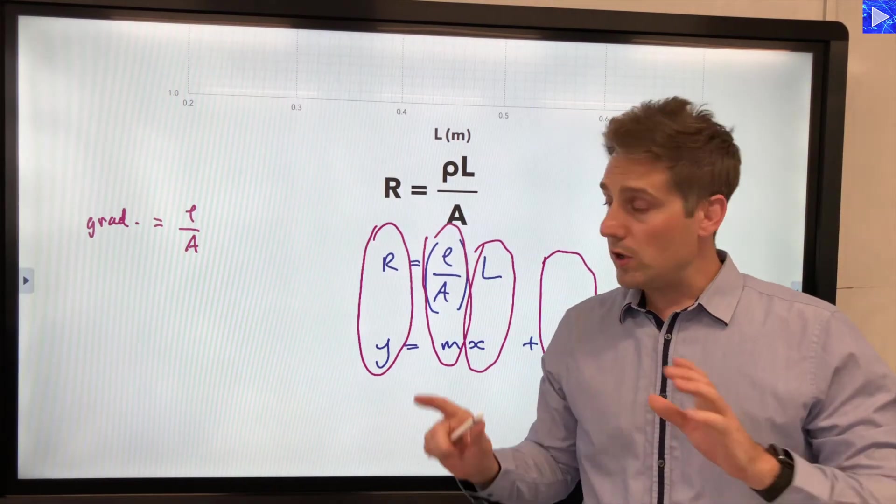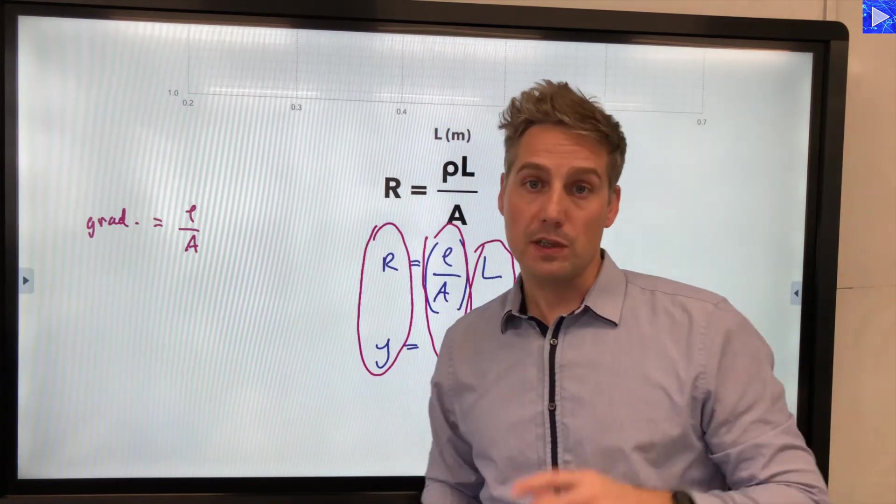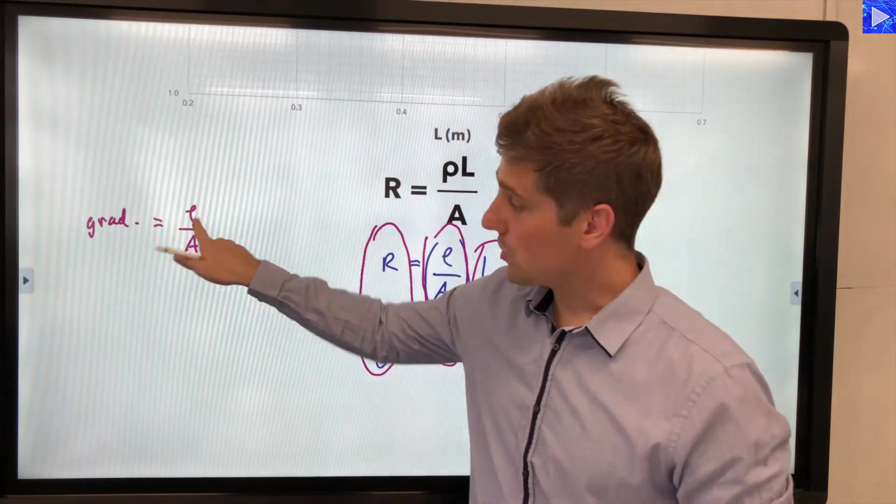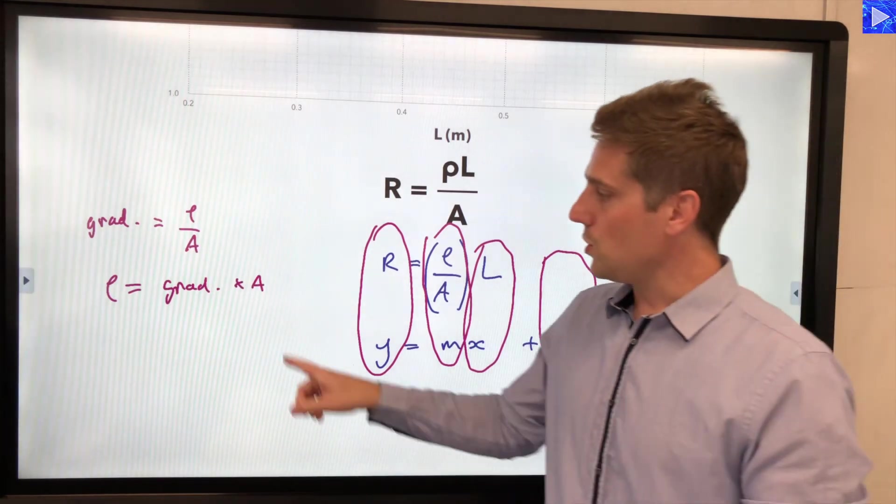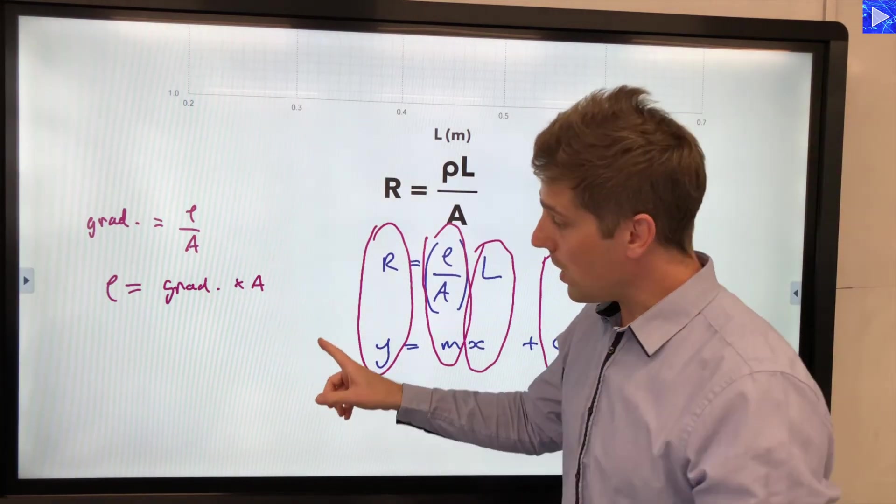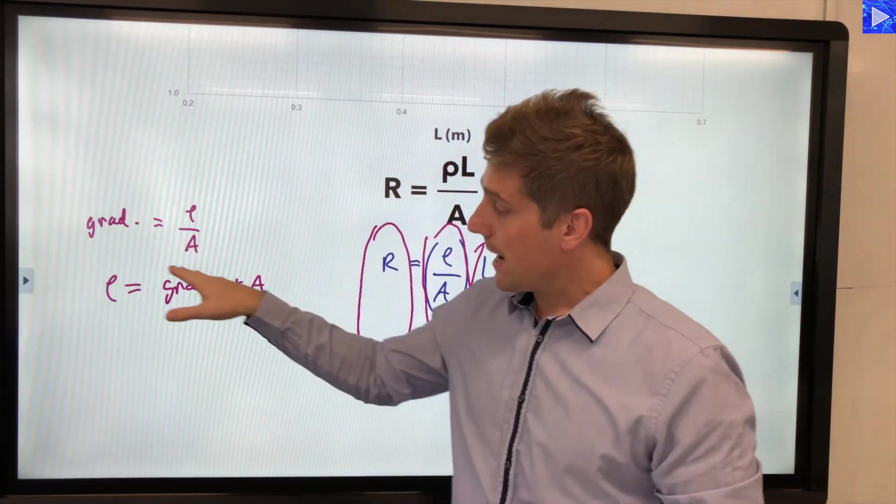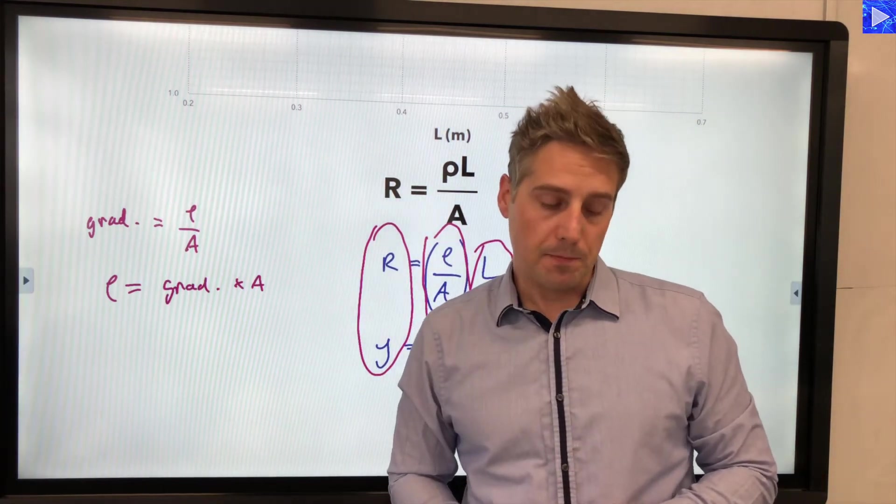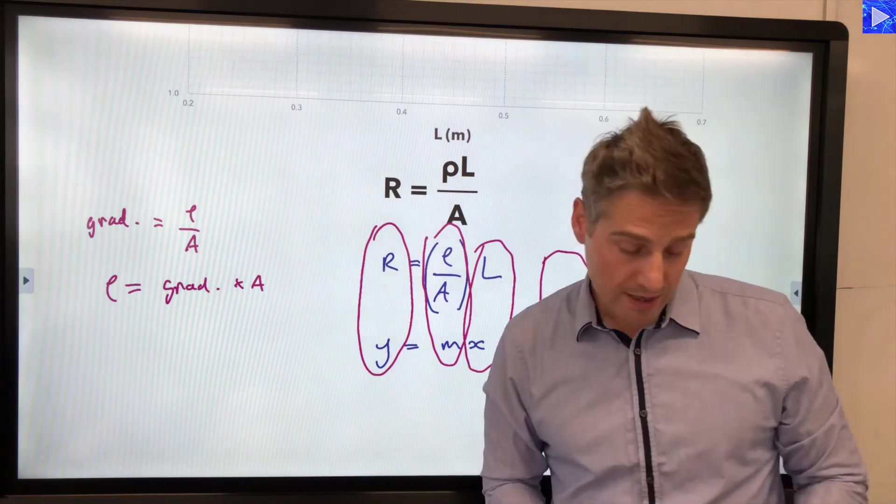As I said before in this experiment you'd be interested to find out the resistivity rho. So if we rearrange this we get rho equals the gradient multiplied by a. So you would measure the cross-sectional area of your wire, multiply it by the gradient that you measure from your graph and that will give you the resistivity. That's example two. Let's look at example three which is a little more complex.